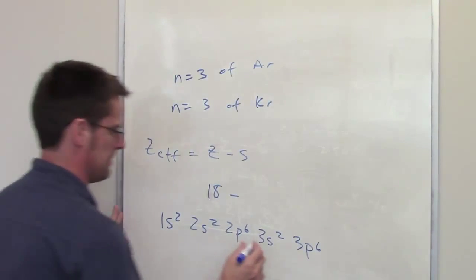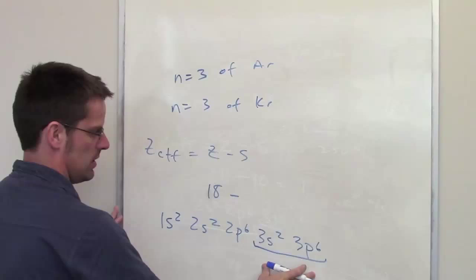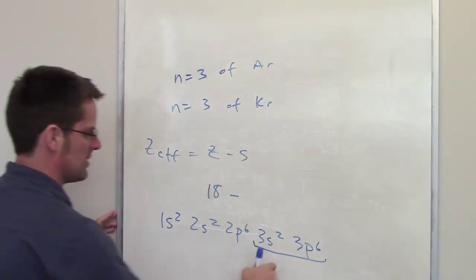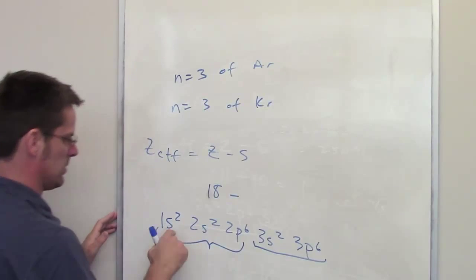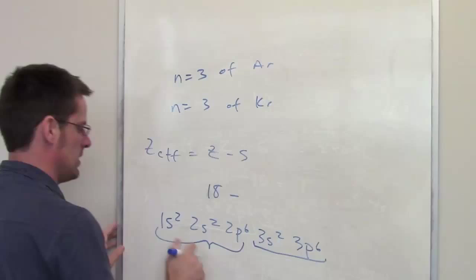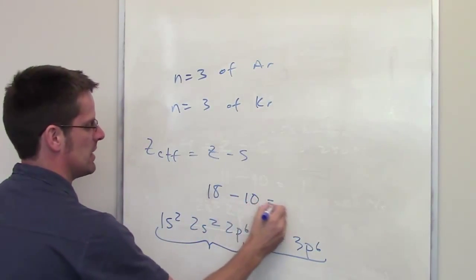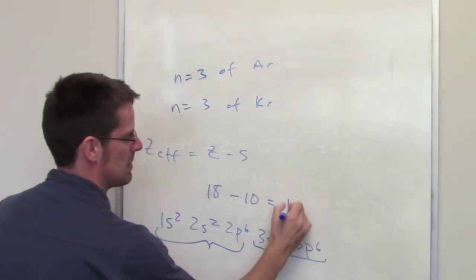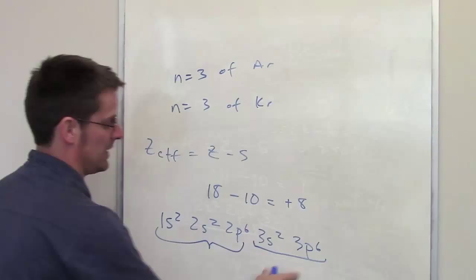The question is asking for the Z-effective of the electrons in n equals 3, so it's just talking about these electrons right here. What that means is for any of these electrons, you count the total number of electrons out here as being inner shell electrons: 2 plus 2 plus 6 equals 10. That's the screening constant, so 18 minus 10 is plus 8. That is the Z-effective for argon's outermost electrons which happen to be in its n equals 3 shell.